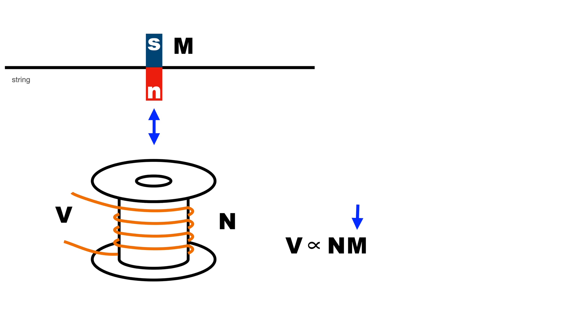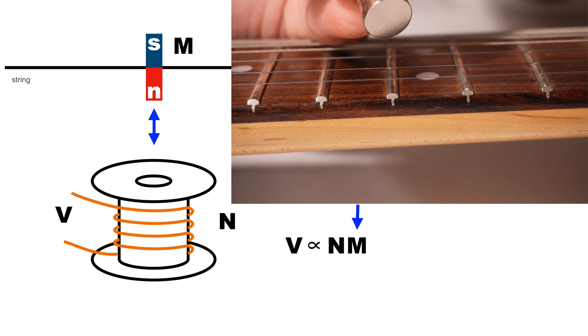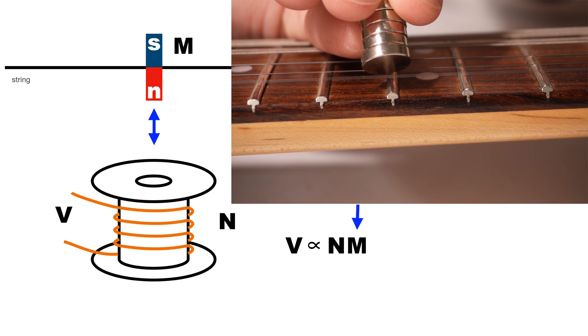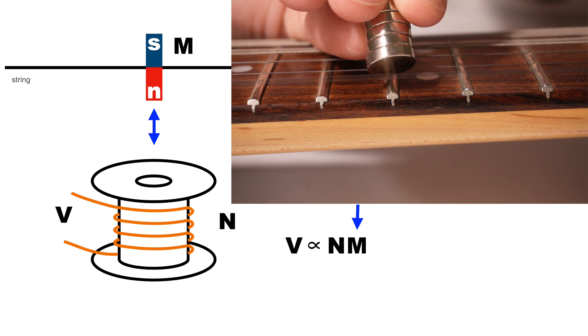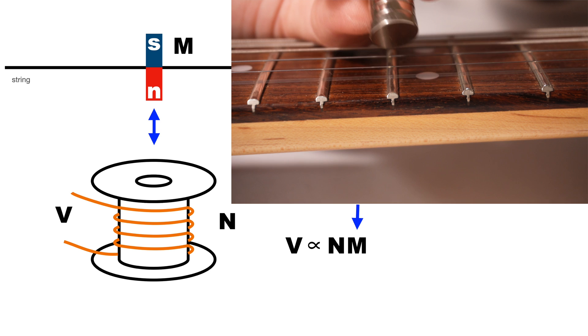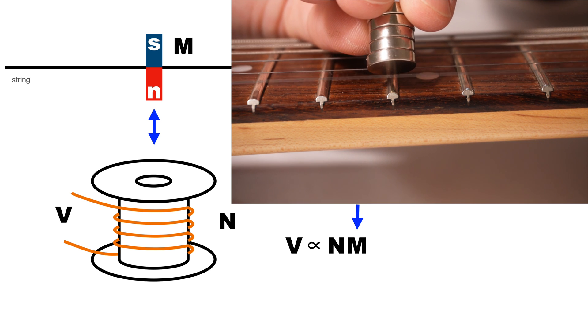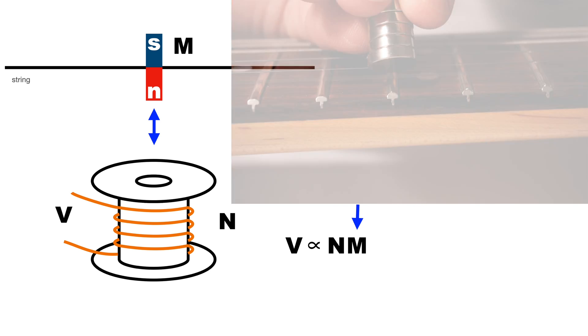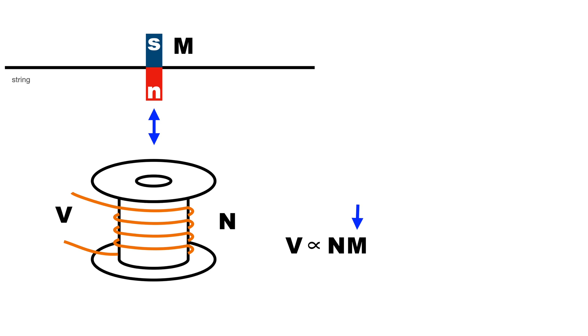Although in practice if you use a magnet that's too strong it kind of makes the string vibrate funny. So I guess you should just use the strongest magnet that doesn't make that happen. And then I can also increase the voltage by just increasing the number of turns of wire I have around the bobbin.